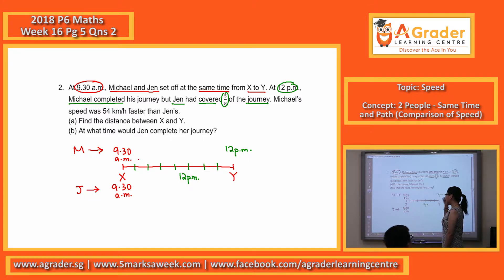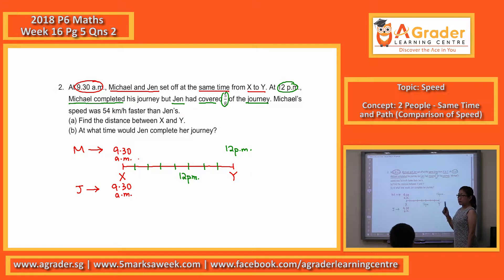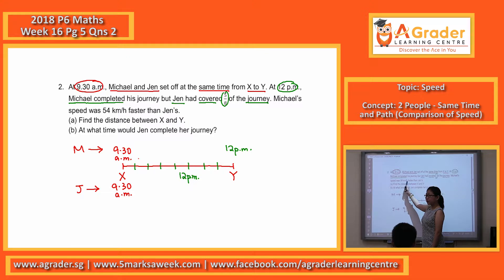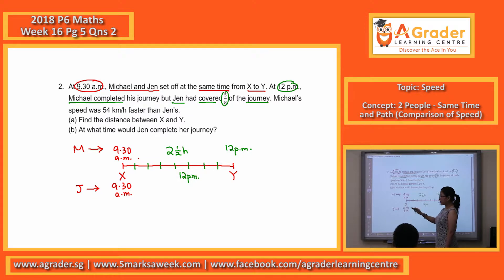Before we move on, let's just look for the time taken here. 9:30 a.m. to 12 p.m., what's the time taken? 2:30, but I would prefer to put it in terms of just hours. Why? If you look at the speed later, it's based on hour, right? So we put it in hours, so 2:30 is equal to 2.5 hours. So 2.5 hours for Michael, the same thing, 2.5 hours for Jen.